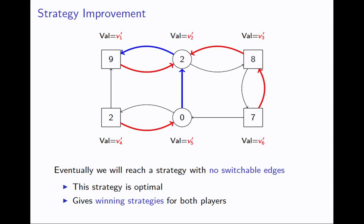If you just keep switching switchable edges, eventually you must stop, because you're going up and up in the valuation ordering. Once you find a strategy that has no switchable edges, you will have found the winning strategies for both players in the parity game.